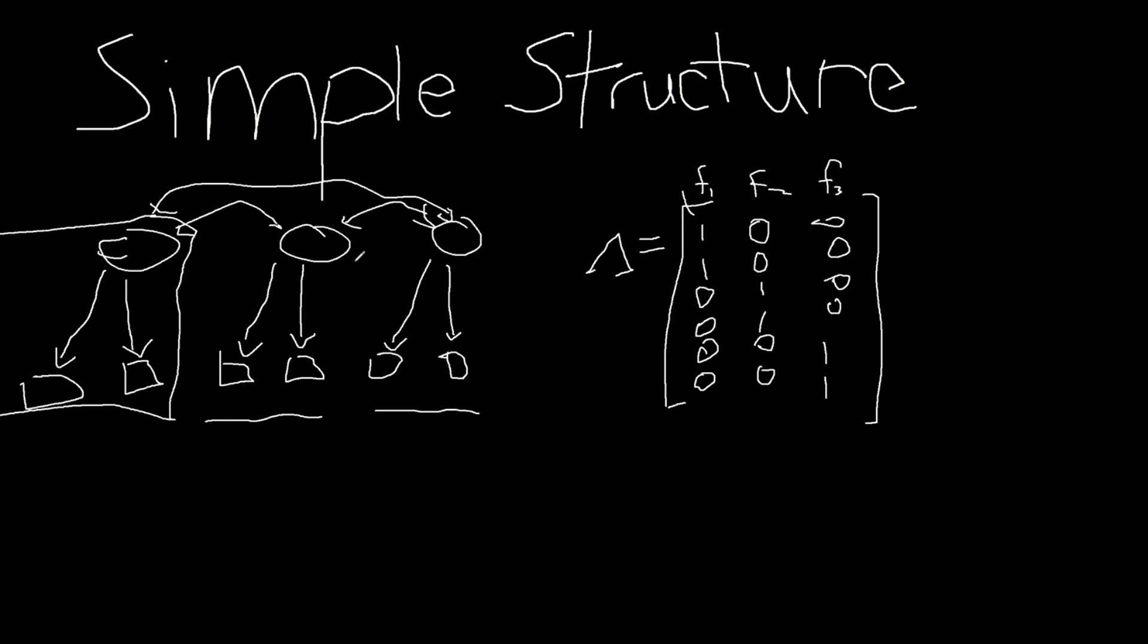We really want those two items to only capture variation in factor 2 and similarly for factor 3. So that's the idea behind simple structure. It's to think about how do we create items such that the amount of variation that we see in each of the primary factors or domains, we can attribute largely to those items.